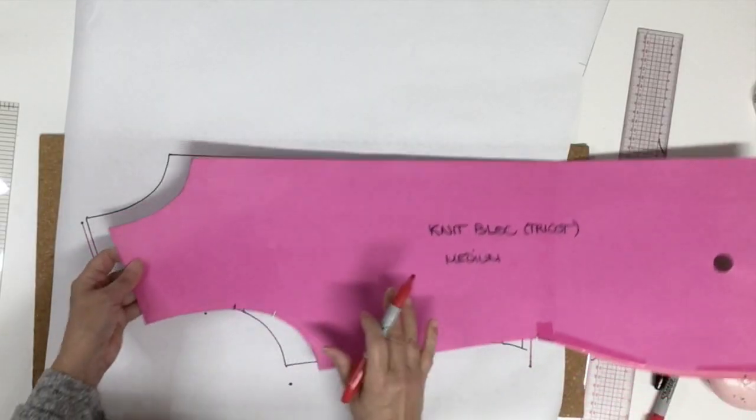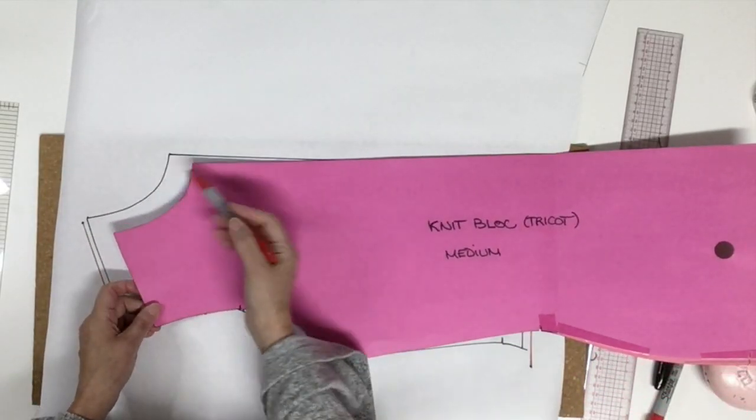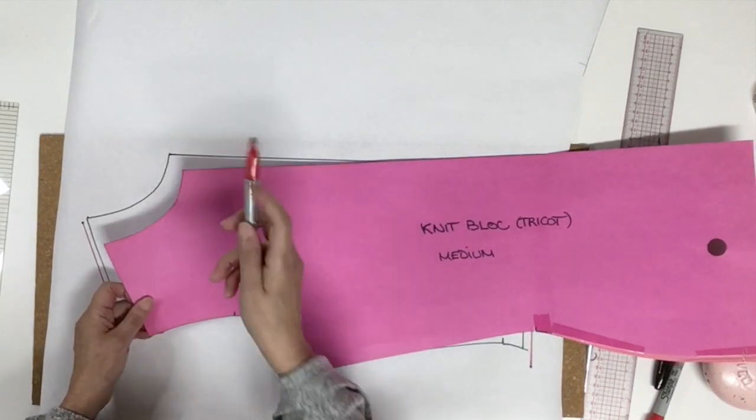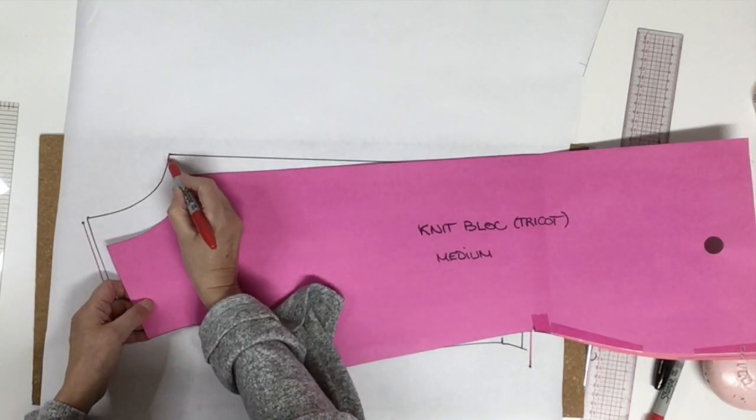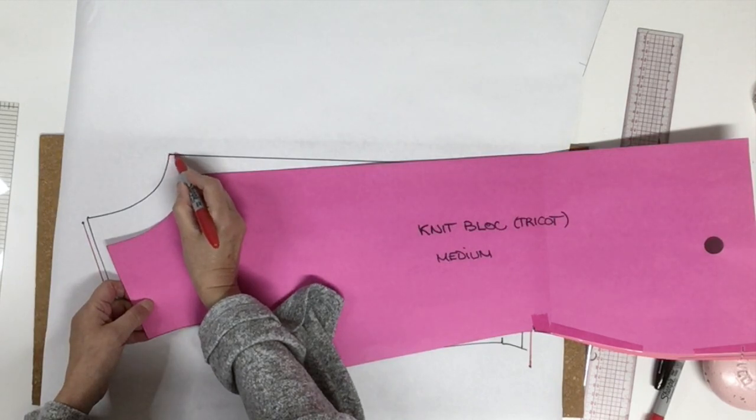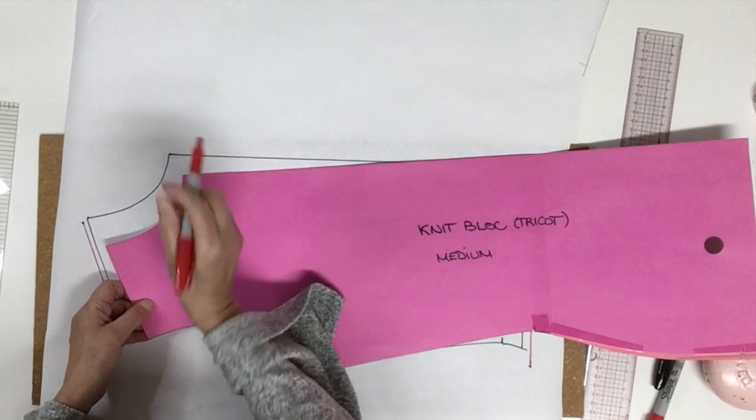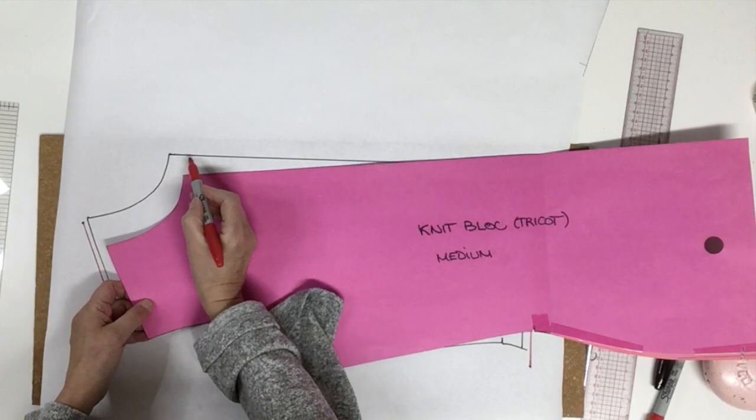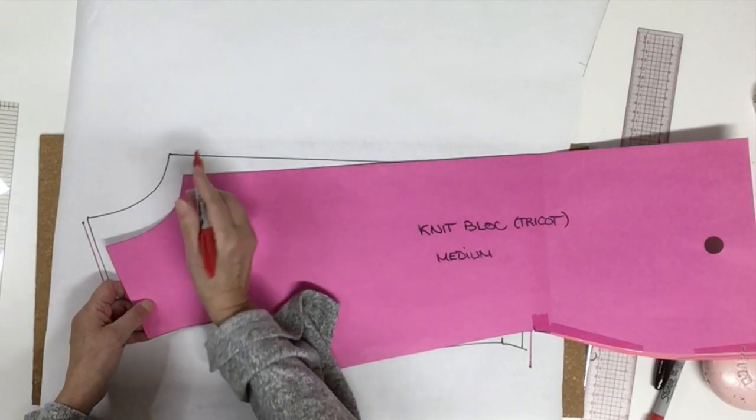We're going to start slowly with the neck line, and here I'm going to insist: the first little part, let's say a quarter inch or five millimeter, should be square with the center front and it has to remain like that.